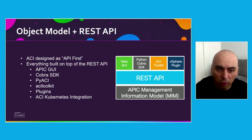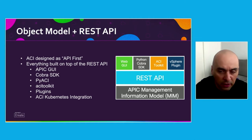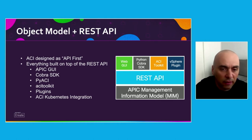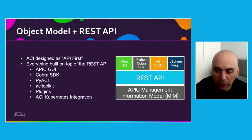Once you know how the objects are organized, they're also exposed over a REST API interface. ACI was designed as API-first, and everything is built on top of this REST API. What I mean is that the APIC GUI — the web interface you access for the APIC — is built on top of this REST API. The COBRA SDK, PyACI, ACI Toolkit, all the plugins, the ACI Kubernetes integrations — everything is built on this REST API. Our solution is also going to use this REST API to perform changes in our ACI fabric as they've been selected in the Smartsheet.